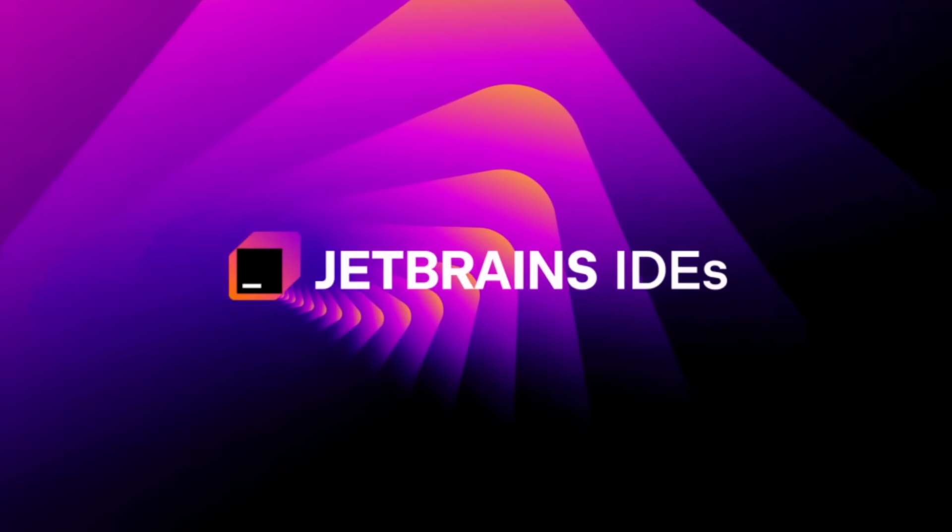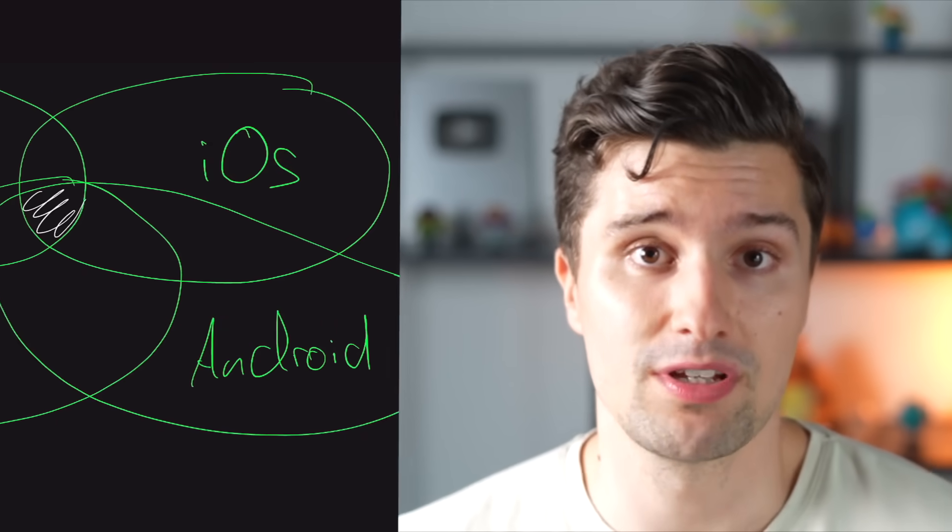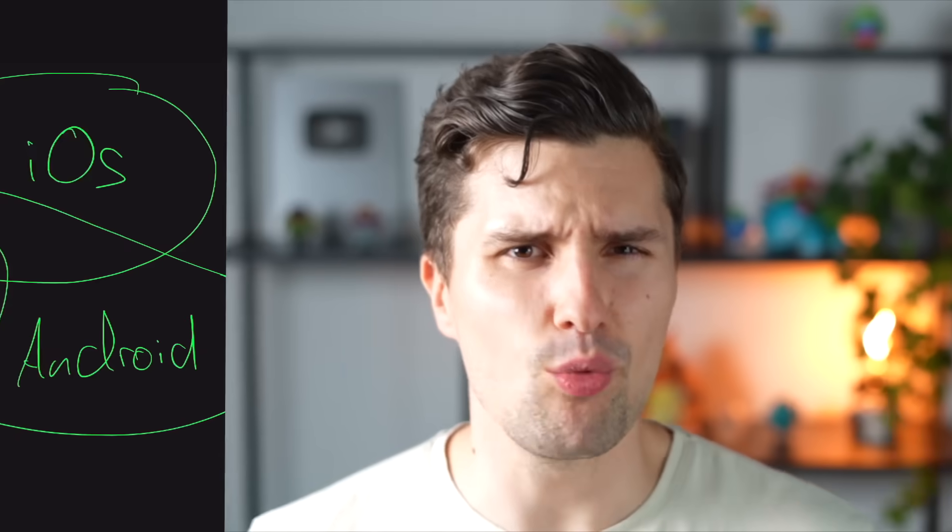Kotlin Multiplatform, or KMP, is a trending technology by JetBrains — the same people behind Android Studio and IntelliJ. KMP allows us to share the common logic between all those different platforms by specifying it only once in Kotlin. That not only means you write much less code — a shared snippet only once instead of four times — but you also only need to test your shared code once, and one test case can cover all four platforms.